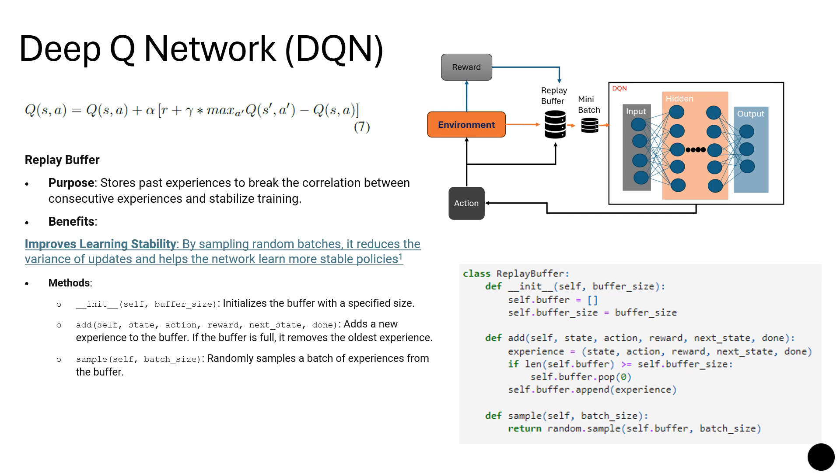So the replay buffer is important. As I was mentioning, it stores the past experience to break the correlation between consecutive experience and establish stabilized training. One of the benefits is to improve the learning and stability by sampling random batches. It reduces the variance of updates and helps the network learn more stable policies.